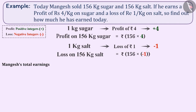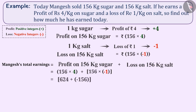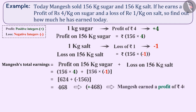Mangesh's total earning equals profit on 156 kg of sugar plus loss on 156 kg of salt, which is 156 multiplied by 4 plus 156 multiplied by minus 1, equal to 624 plus minus 156, equal to rupees 468. The positive 468 shows that Mangesh earned a profit of 468 rupees.